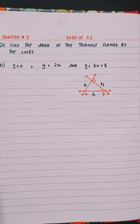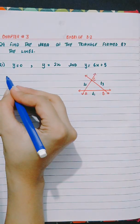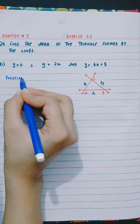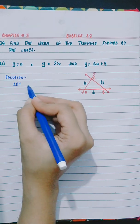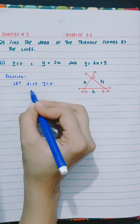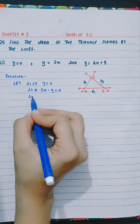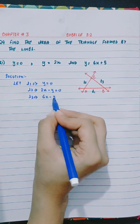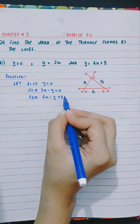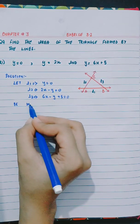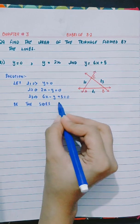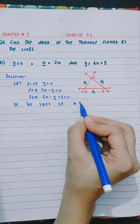Find the area of the triangle formed by the lines. Part 1: Let L1 be y equals 0, L2 be 2x minus y equals 0, and L3 be 6x minus y plus 5 equals 0. These are the sides of triangle ABC.